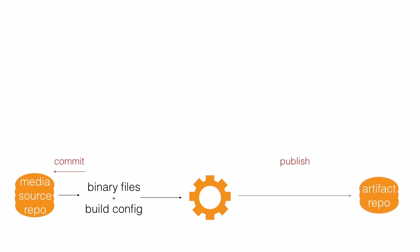This arrangement also means we don't have to commit every update to our images that we want to share. If we're making frequent small changes, we can republish the resources library on the artifact repository without checking the changes into version control yet. Our teammates' builds will pick up the new version from the artifact repository even though it's not in the version control repository.